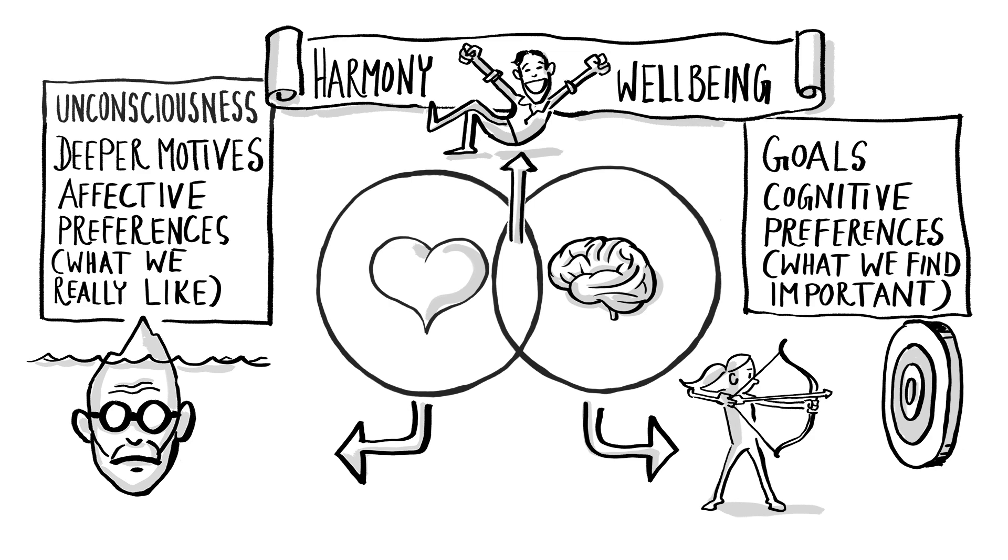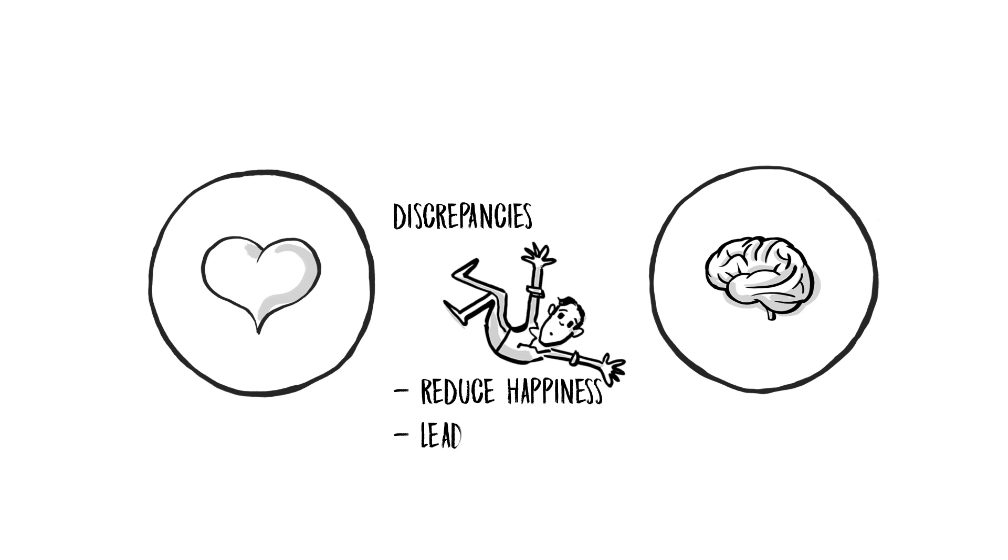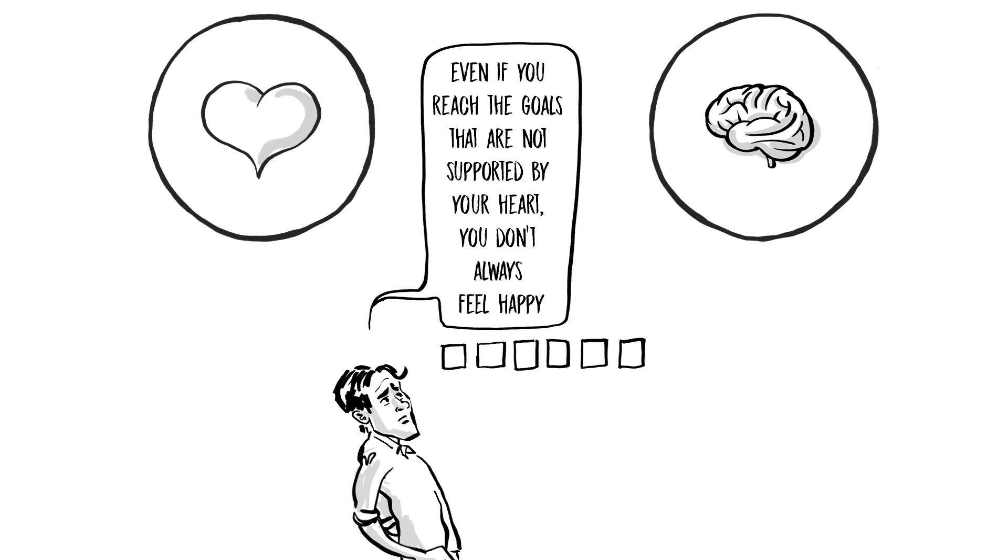So what happens when the two circles don't overlap, when either head or heart are left out? Studies have shown that discrepancies between head and heart reduce happiness, lead to stress and burnout, and they make it harder to reach our goals. In fact, research suggests even if you reach the goals that are not supported by your heart you don't always feel happy.